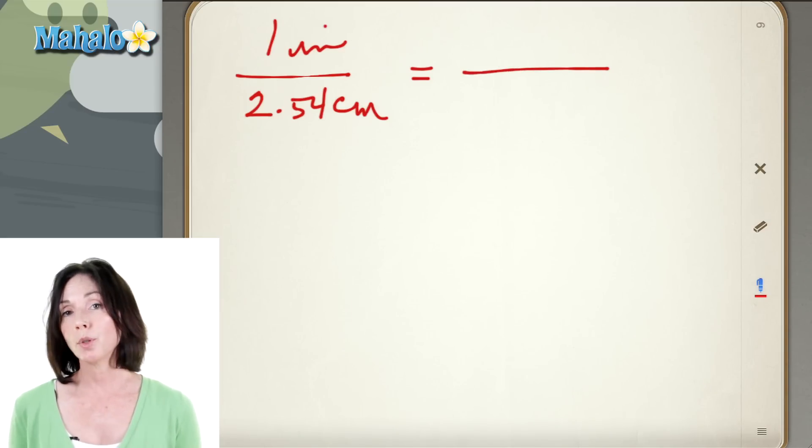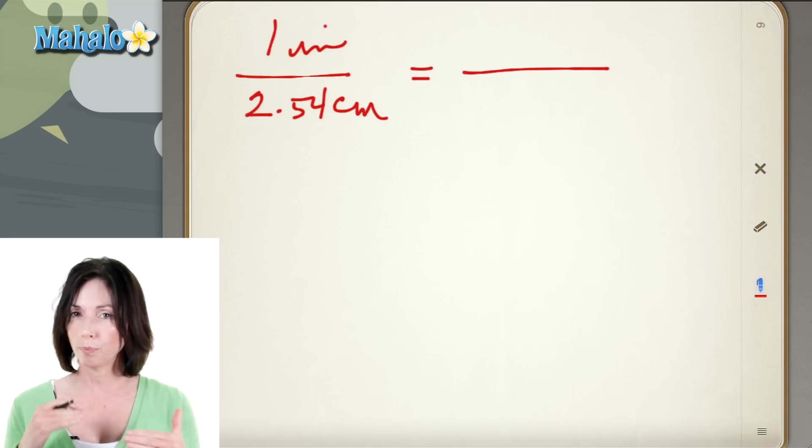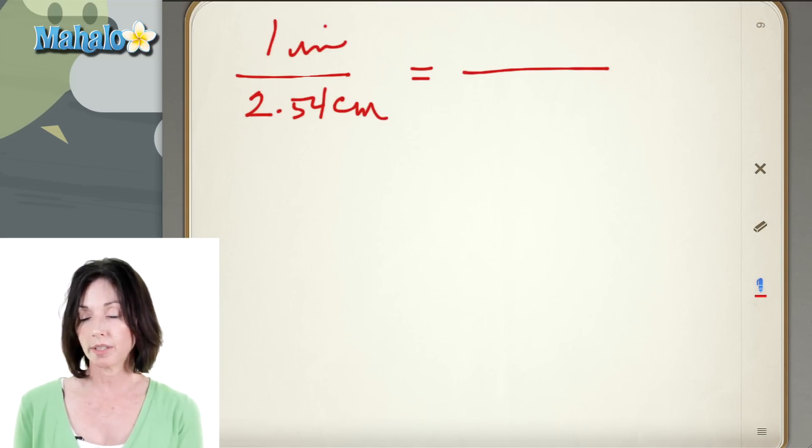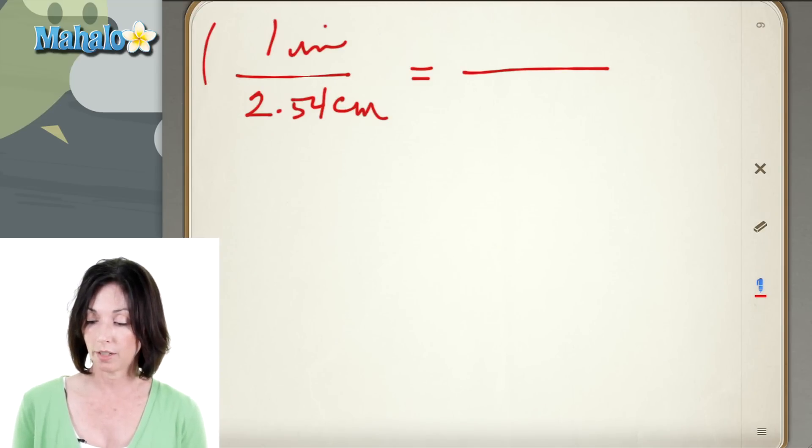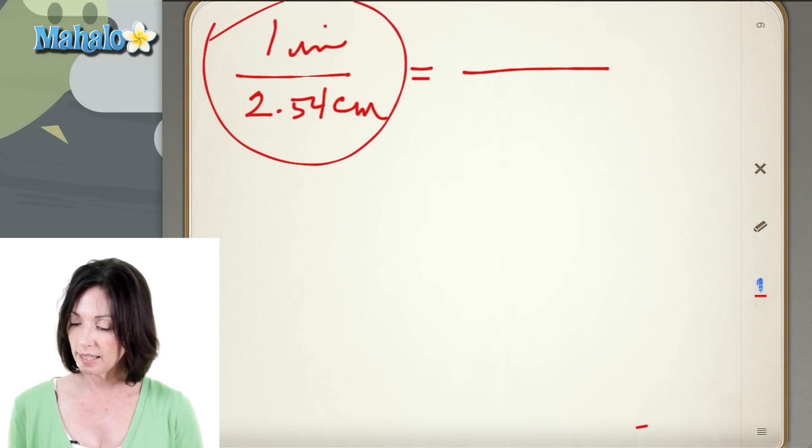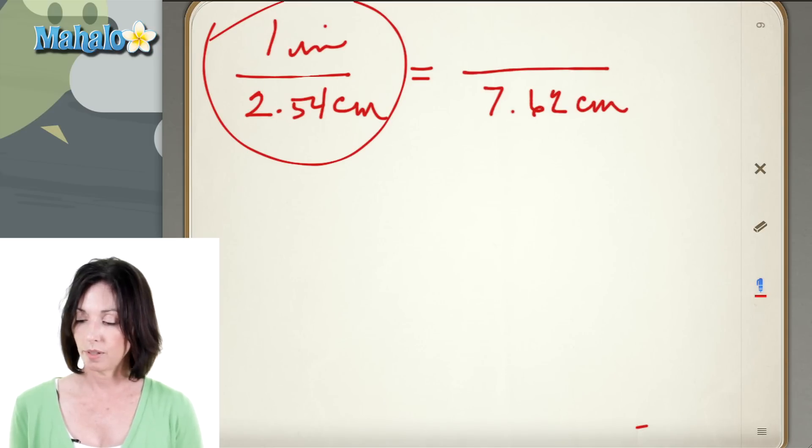Now whenever you do a proportion problem you have to make sure that you put things in the right order. So inches have to be on the top and centimeters have to be on the bottom because that's how I wrote my conversion factor here. So let's say I have 7.62 centimeters and I want to find out how many inches that is. So I have x inches on the top.